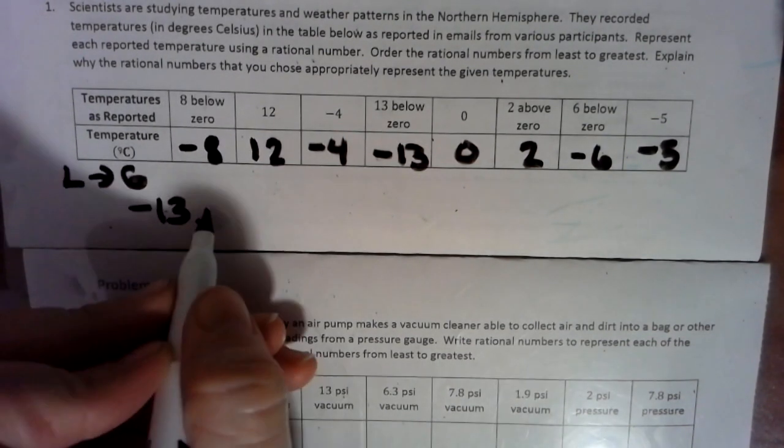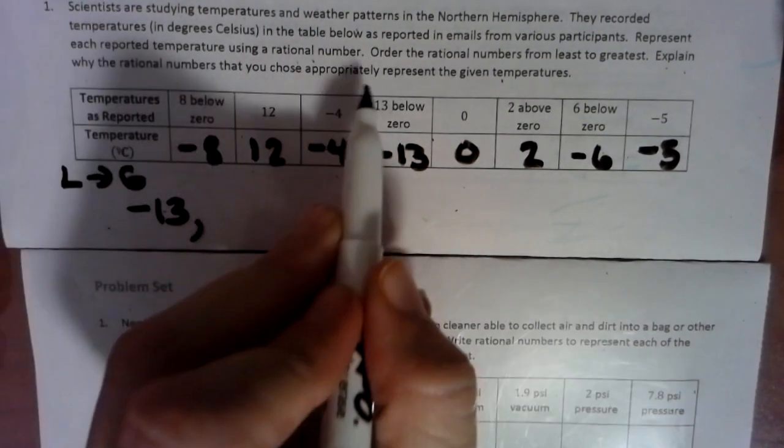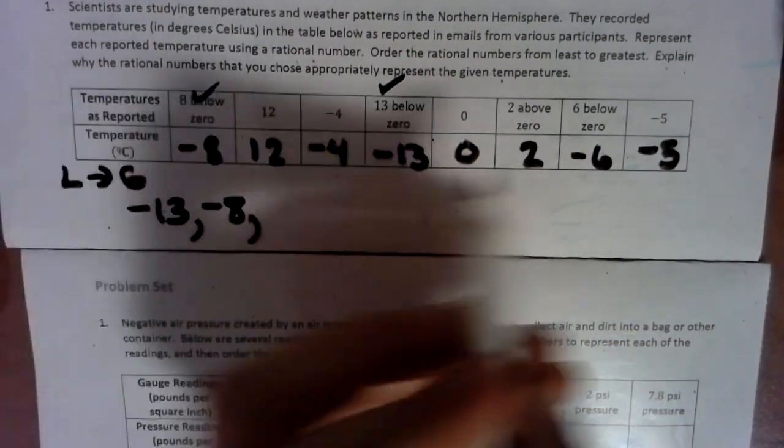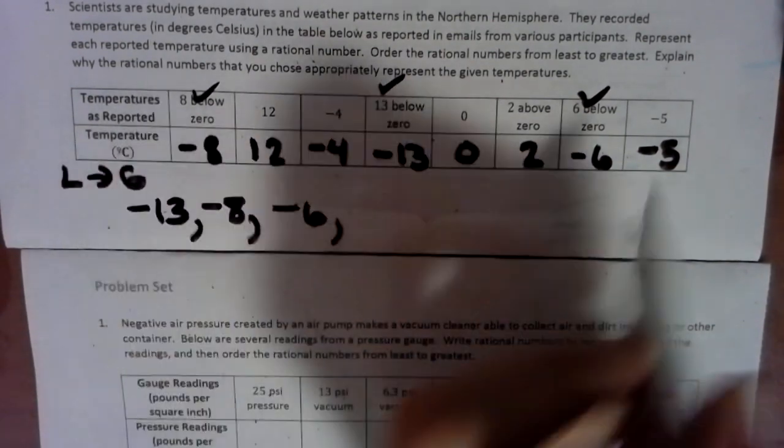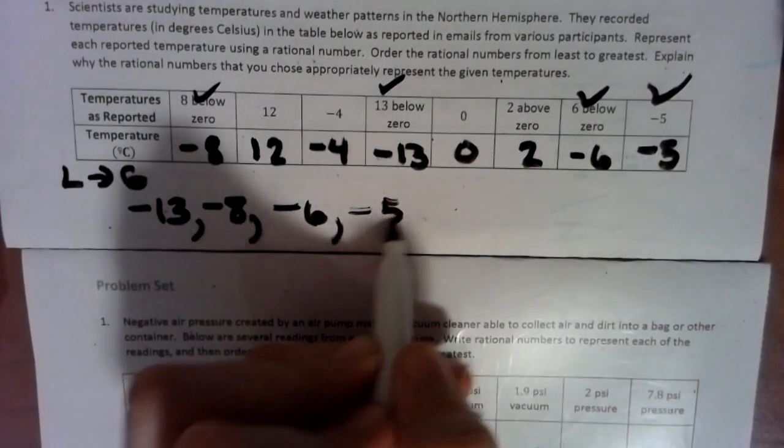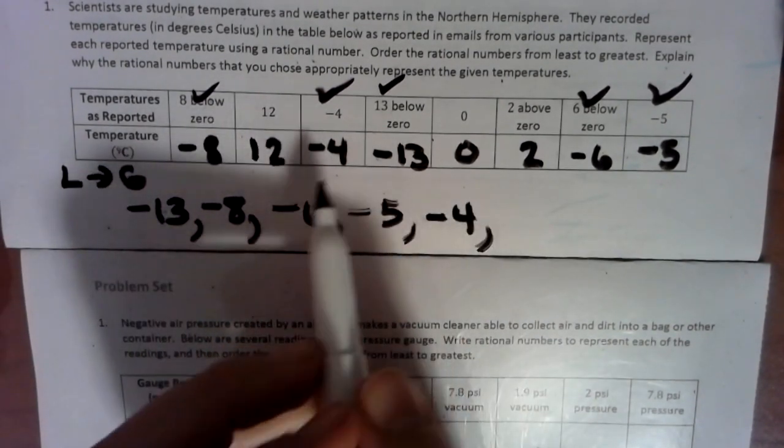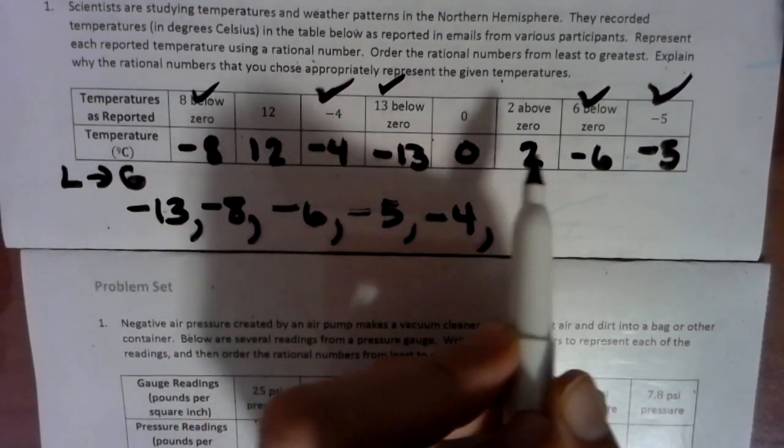And then our next biggest negative would be negative 8, so negative 8. Then we have negative 6. Then we have negative 5. We have negative 4. And then we have a positive 12, a 0, a 2.